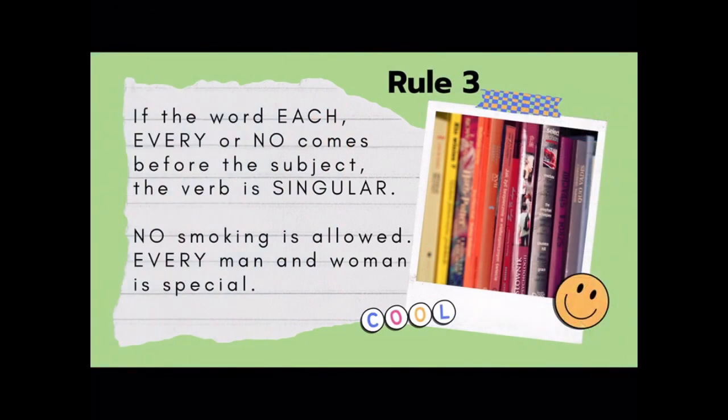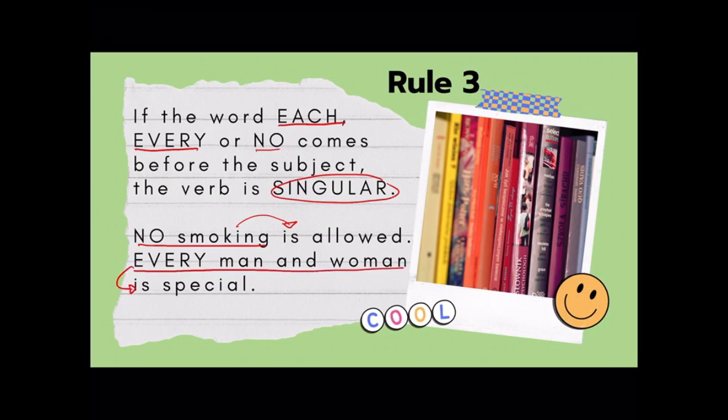Rule number three states that if the word each, every, or no comes before the subject, the verb is singular. No smoking is allowed. The word no smoking is your subject and its verb is is. In the next sentence, every man and woman is your subject and the verb is still singular, which is is.